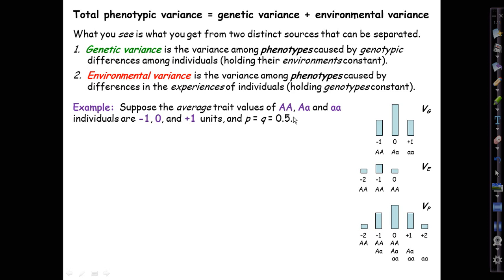And our allele frequencies will be P and Q equals a half. So we have equal numbers of big A and little A alleles in the population. And the three genotypes produce these phenotypic proportions or values, minus one, zero, and plus one. Then the genetic variance, the average squared deviation from the population mean, will be 0.5.